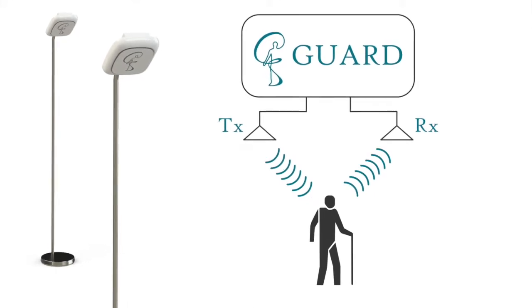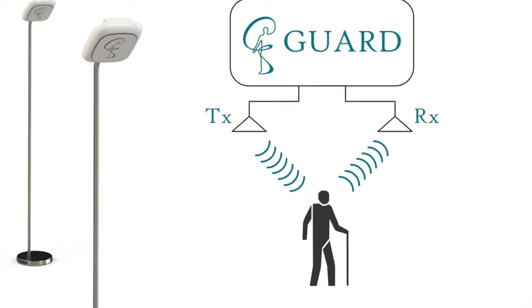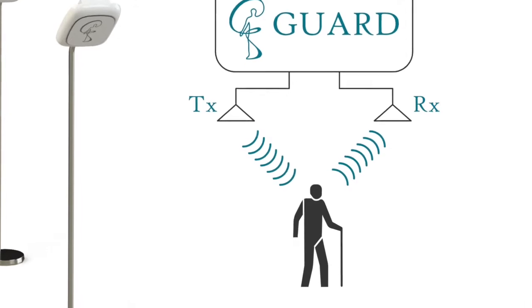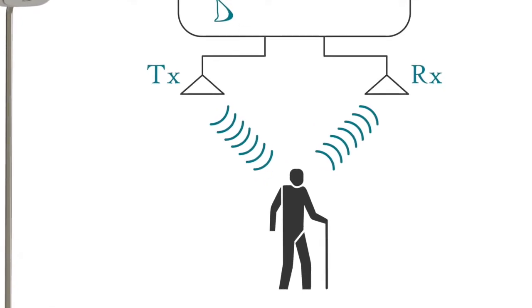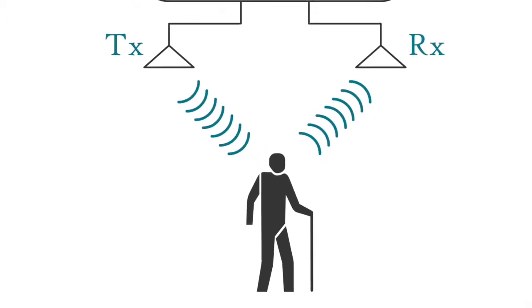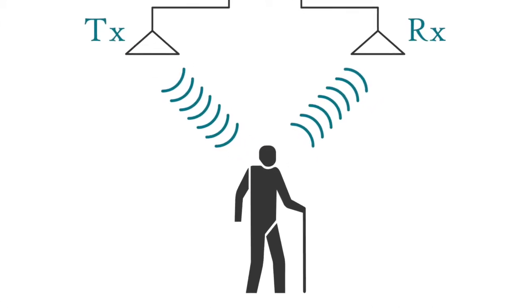These small packets of energy are then reflected by surrounding objects. This reflection is then picked up again and processed. Any changes in this reflection now gives an indication whether there is someone moving or breathing inside the surrounding area.